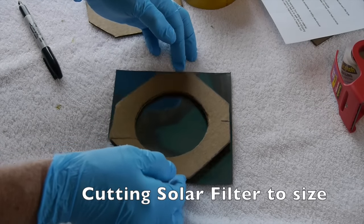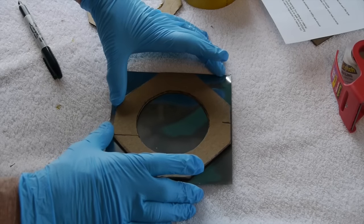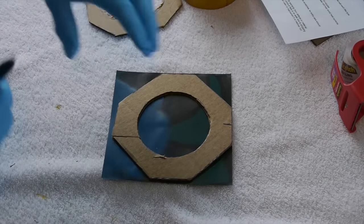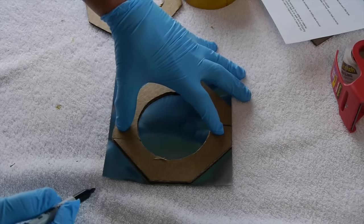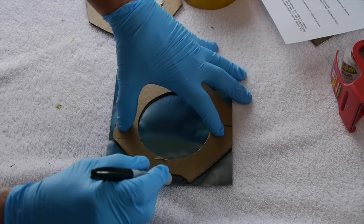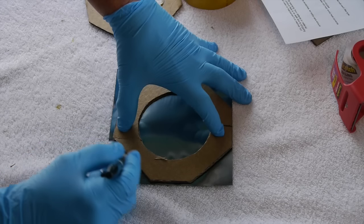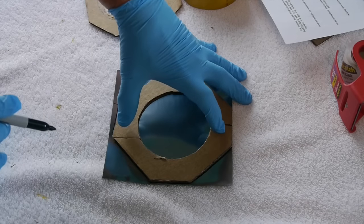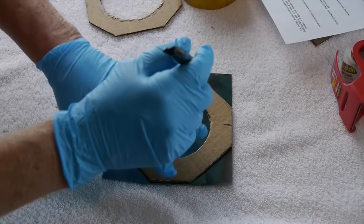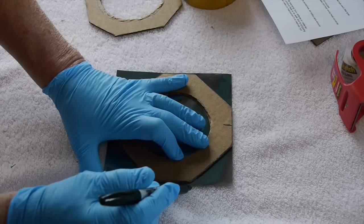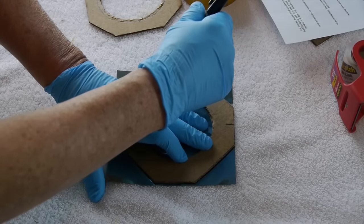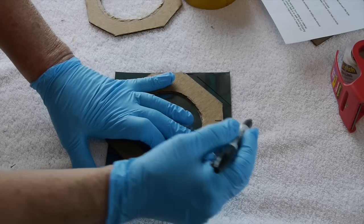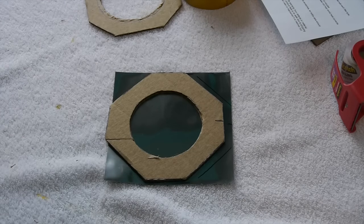Now we'll mark out our filter material to the shape of this flat piece that's going on the end of the telescope. I've never worked with this material before. It's pretty fragile. You want to be careful. You don't want to poke a hole in it or scratch it up. I've got the rubber gloves on because they say you should not get fingerprints on there.